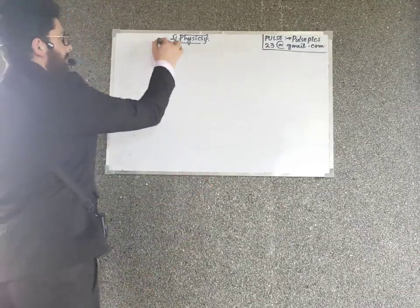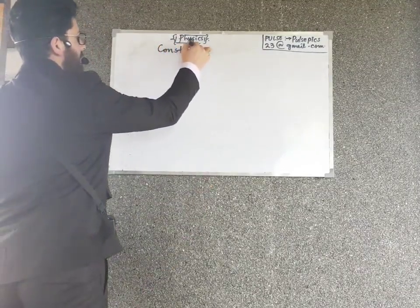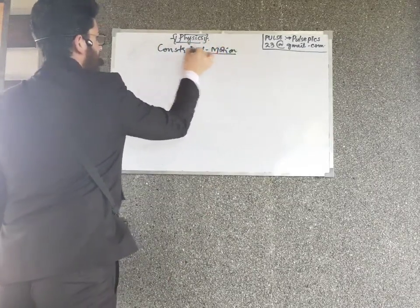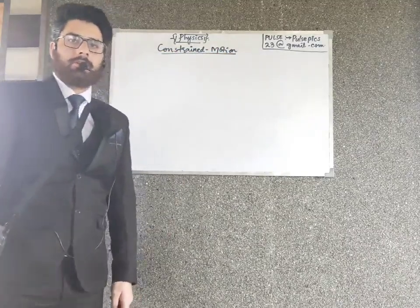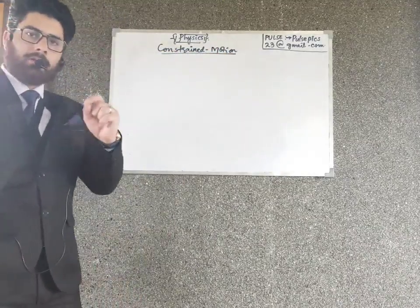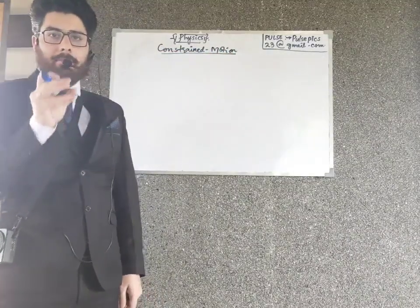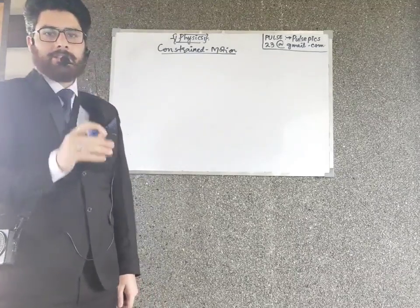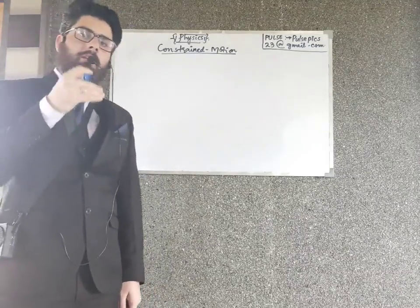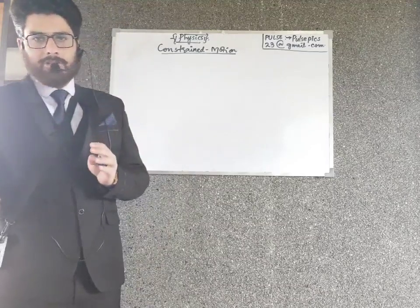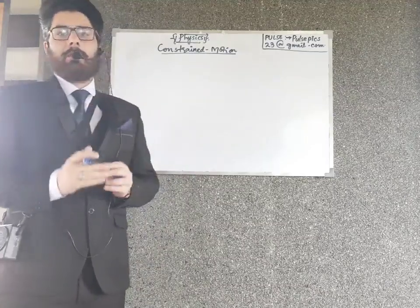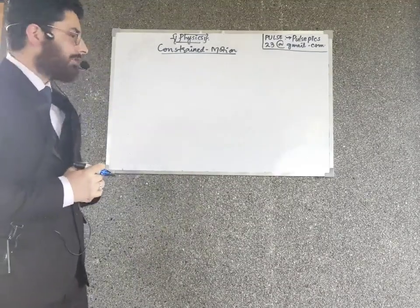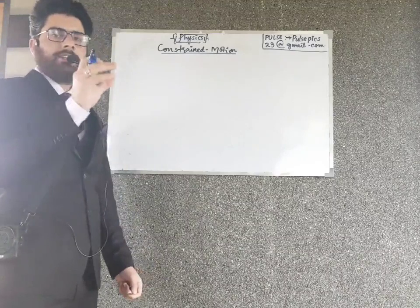Constrained motion is a very important topic regarding connected motion. What do you mean by constrained? Constrained means whenever you are imposing a condition on any system. When we impose a condition on any system — whether it is a pulley system, a string system, a string with blocks, or a wedge system — that is known as a constraint. So constraint means a condition imposed on a system.